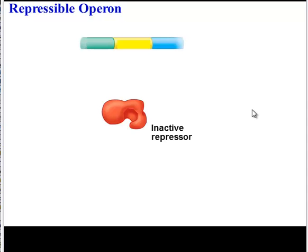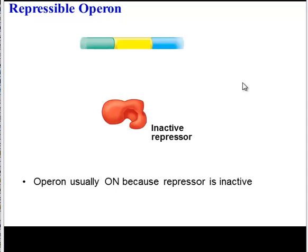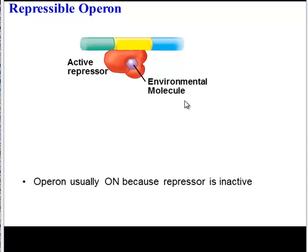The opposite is a repressible operon. A repressible operon is normally on because the repressor is normally inactive. However, if there's a change in the environment, the repressor might become active and turn the operon off.